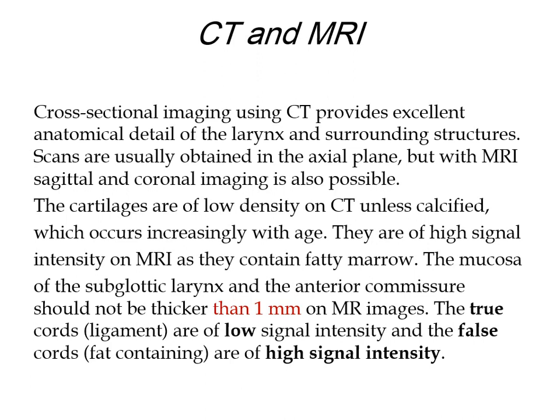CT and MRI cross-sectional imaging provides excellent anatomical detail for the larynx and its surrounding structures. Cartilage will be of low density on CT unless calcified, which occurs more in older age groups. On MRI, all cartilage will be high signal on T2 and low signal on T1 because they contain water. The soft tissue of the subglottic larynx and the anterior commissure should not be more than one millimeter; if more than one millimeter, there is a problem.